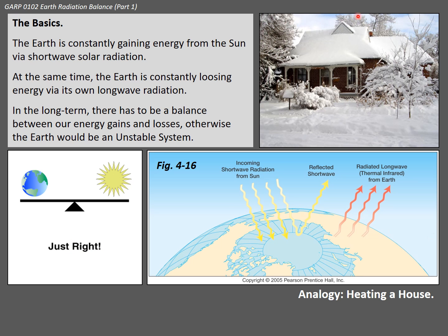Illustrated here, it has to be a balanced situation. The Earth is constantly gaining energy from the Sun by shortwave solar electromagnetic radiation. At the same time, the Earth is also constantly losing heat via its own longwave electromagnetic radiation. In the long term, there has to be a balance, otherwise we'd have an unstable system.